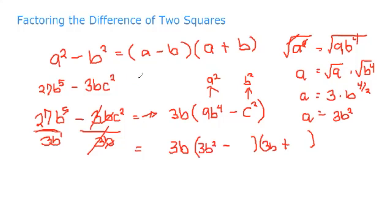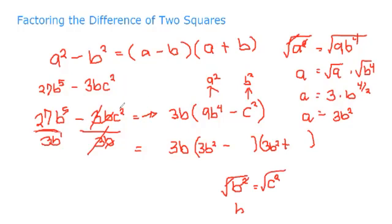Both sides give us 3b squared. So the final factor is 3b multiplied by the quantity 3b squared minus c, times the quantity 3b squared plus c. That is how we factor the difference of two squares — a squared minus b squared. Just follow this pattern and you can solve any problem like this.